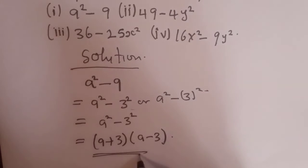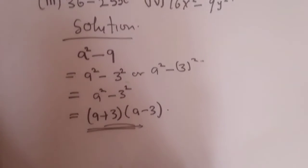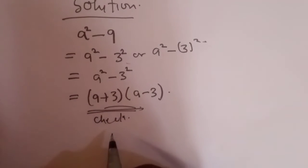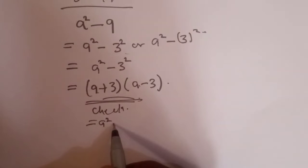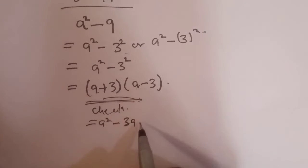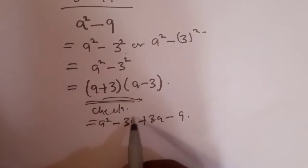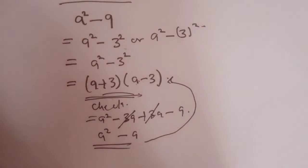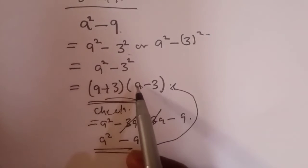Therefore, a² minus 9 can be rewritten as (a + 3)(a - 3). Let's quickly check by expanding the bracket: a times a gives a²; a times minus 3 gives minus 3a; plus 3 times a gives plus 3a; and 3 times minus 3 gives minus 9. The middle terms cancel, leaving a² minus 9 — we've got our answer back.